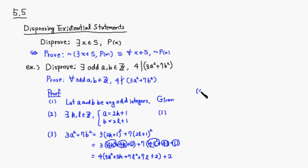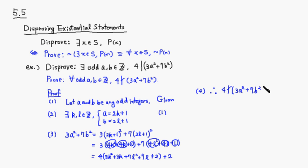This tells us that 3a² plus 7b² equals 4 times some integer plus 2. So when divided by 4, it has a remainder of 2, which means it is not divisible by 4. Therefore, 4 does not divide 3a² plus 7b². That's the end of the proof. For any odd integers a and b, 4 never divides 3a² plus 7b² because of this remainder of 2.